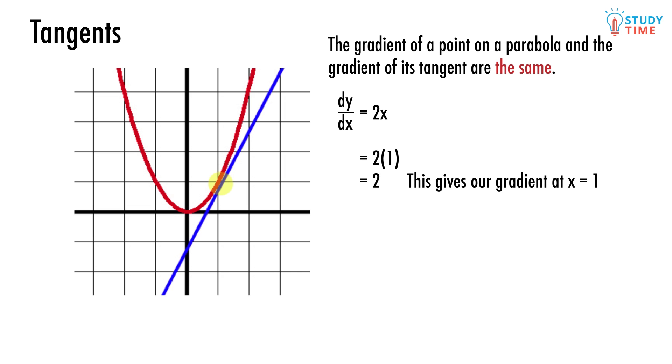Remember, the reason we're allowed to do this is because when x equals 1, the gradient of the straight line and the gradient of the parabola are the same. We start with the gradient equation of the parabola, then we replace the x with a 1. dy dx equals 2 times 1 equals 2.